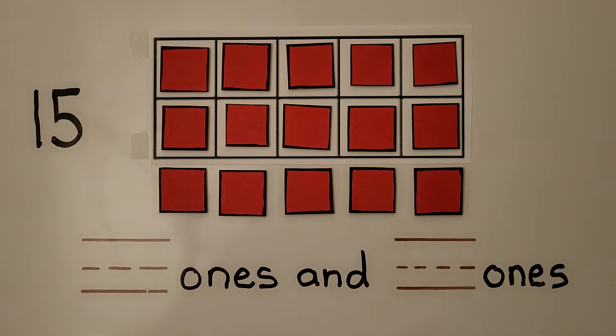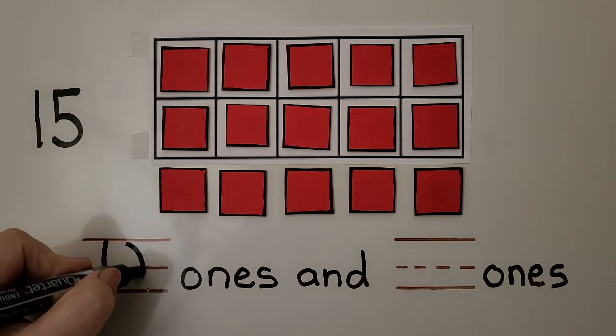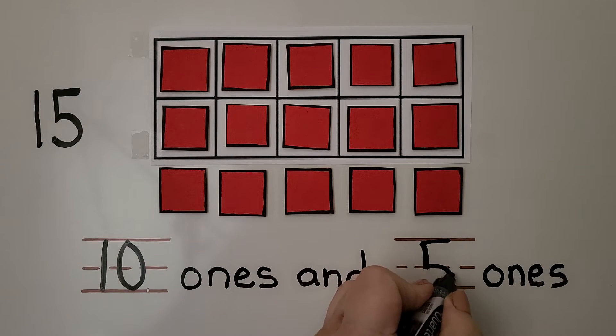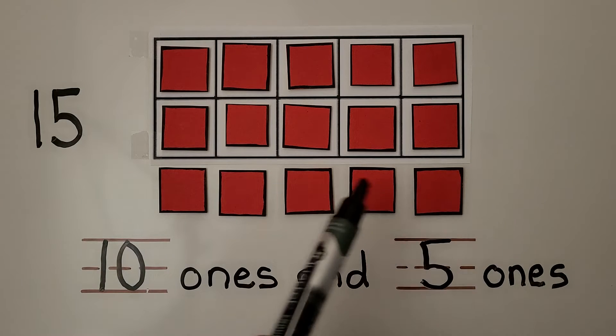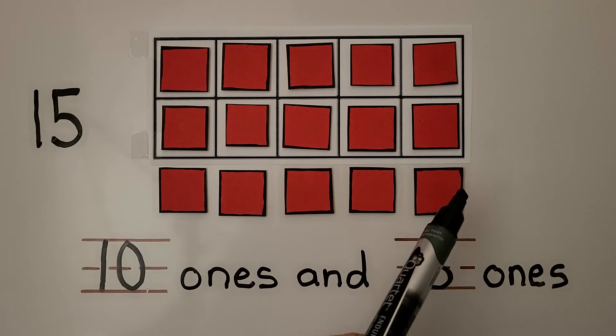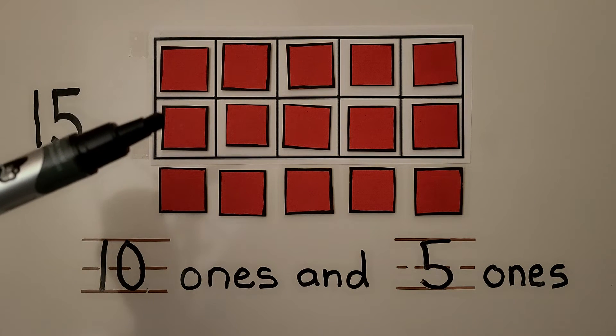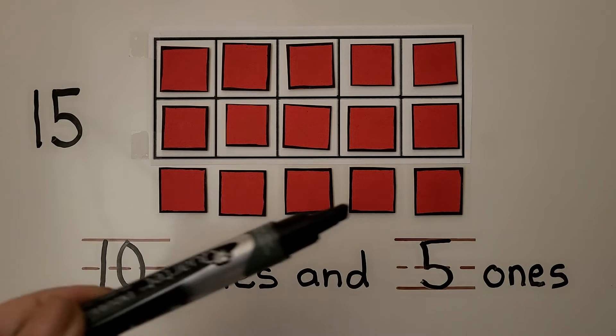We have 10 and 5 more. We have 10 ones and 5 ones. Do you see how the 5 ones go all the way across just like in the 10 frame? Each row has 5 counters. We have a full row of 5 here, a full row of 5 here, that makes our 10, and a full row of 5 here.